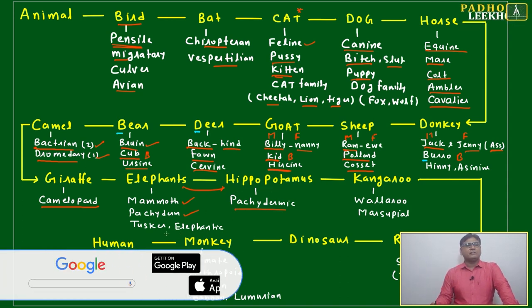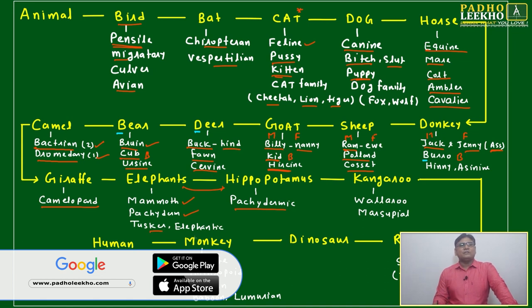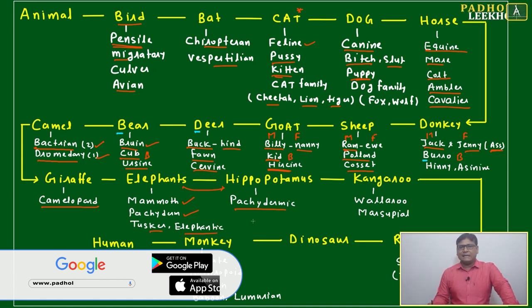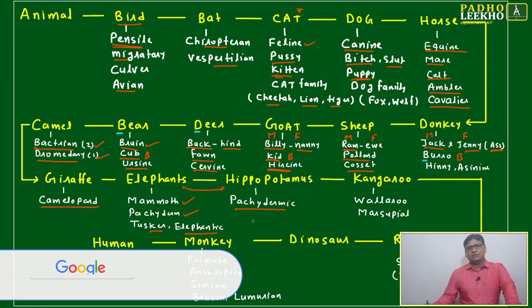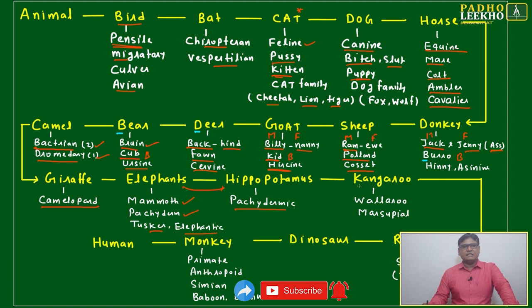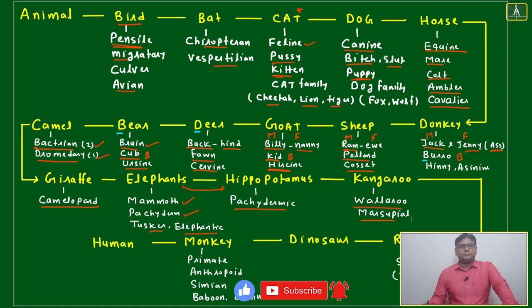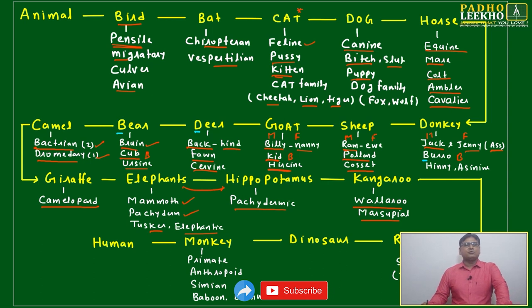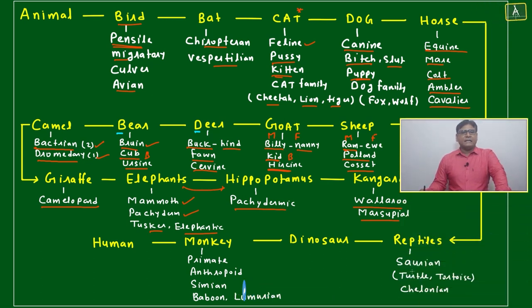Hippopotamus is also pachydermic. Tusker refers to one who has tusks — that is the elephant. Elephantine is also related to elephant. After kangaroo, there are two words related to it. Next we are coming to the reptiles.